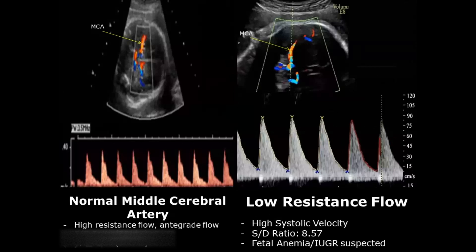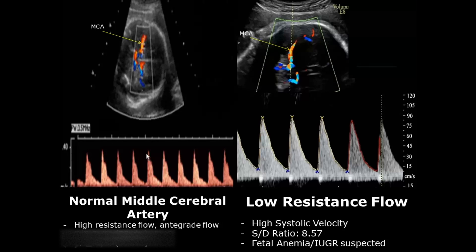A low-resistance flow is abnormal — we will see high velocities. Here you can see the PSV is almost 80 centimeters per second, whereas in the normal case it is below 40 centimeters per second. The SD ratio is very high at 8.57, which can be a sign of fetal growth restriction or anemia.